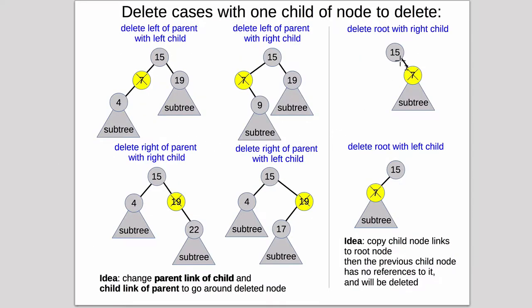So here are the cases. If we delete a left child of parent with a left child — so we have the parent, this is the node we found to delete, and it only has a left child — all of these nodes we're deleting only have one child. So in this example, we're going to be promoting the 4 up to replace the 7. We have to change the left child pointer for 15 to point to node 4, and we have to change the parent pointer for 4 to point to 15. Then 7 will go away because there won't be anything referring to it.